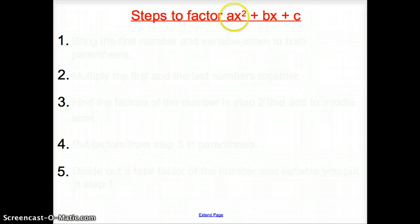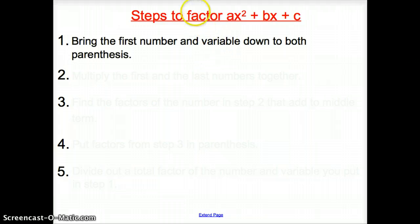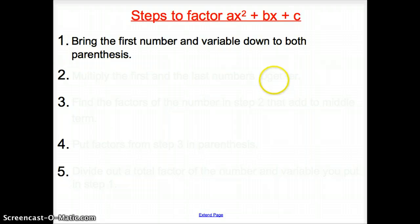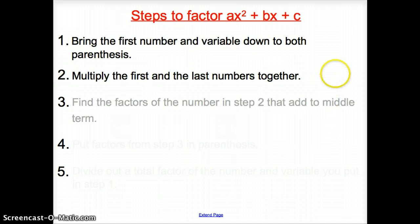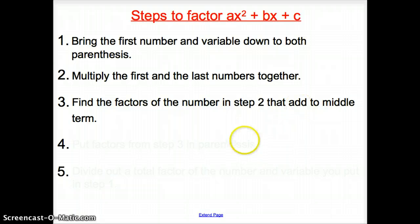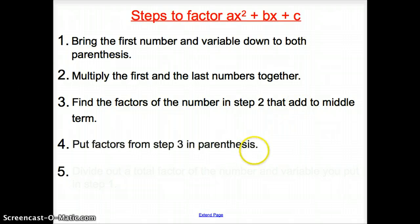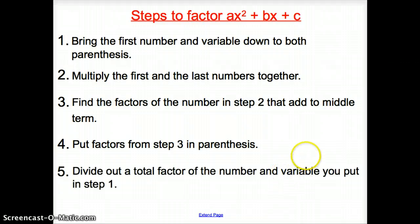Here's a quick refresher on the steps to factor when there's a number in front of the x squared term: bring the leading coefficient and variable into both sets of parentheses; multiply the first term times the last term; find factors of that product that add up to the middle term; put those factors in parentheses; then divide out the leading coefficient from one factor.